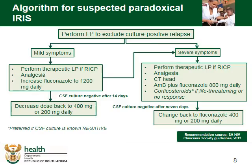This is an algorithm that summarizes the approach if you consider this to be a paradoxical IRIS — that is where the patient with an existing opportunistic infection on treatment gets worse on ARVs. Note that this is the only time that there might be a place for the use of steroids. Your management will depend on the severity of the clinical symptoms. If a patient only has mild symptoms, perform a therapeutic LP if indicated and increase the fluconazole whilst waiting for the culture results. There's no place here to do a CrAg or Indian ink as it may pick up dead yeasts and is not a confirmation of active infection.